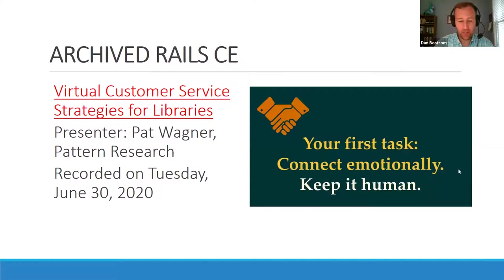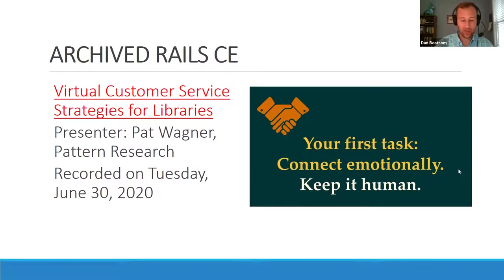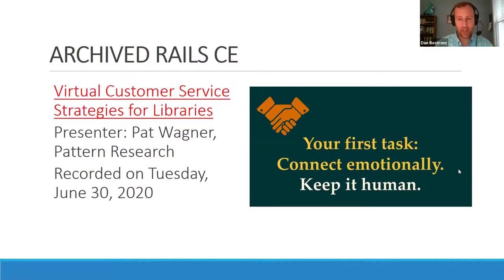When I was setting up this online roundtable, I thought about what webinars people interested in this topic might enjoy. This archived session was held back in June. Pat Wagner is a consultant and trainer who focuses on productivity and workplace relationships. In this webinar, she talks about what it means to communicate with library patrons in the virtual environment. Some of you might be feeling downtrodden about the loss of that personal connection with patrons in the digital realm — Pat talks about that and offers strategies for overcoming it. It's archived on the Rails website, accessible with your L2 username and password at any time.